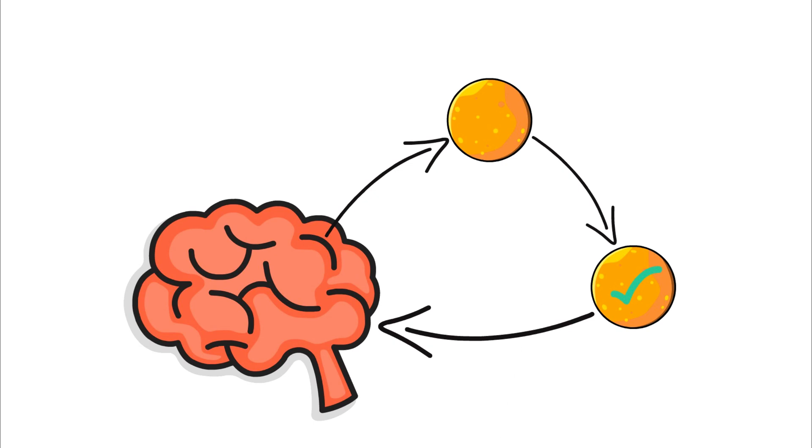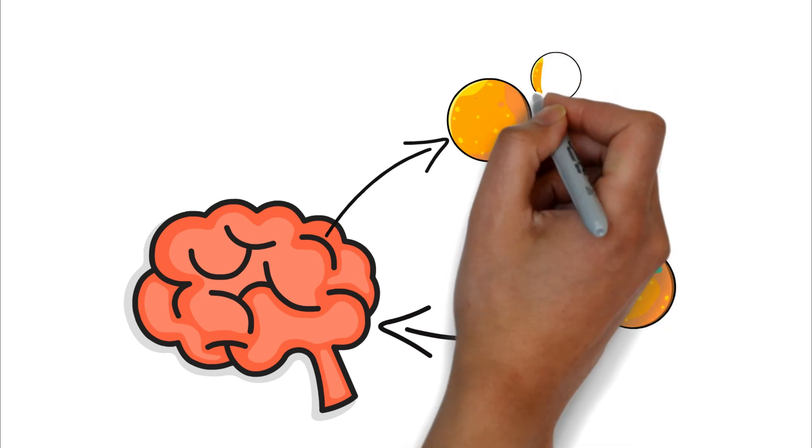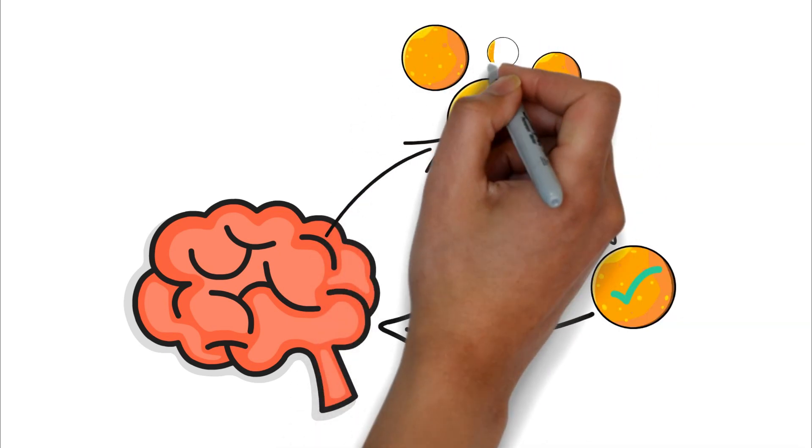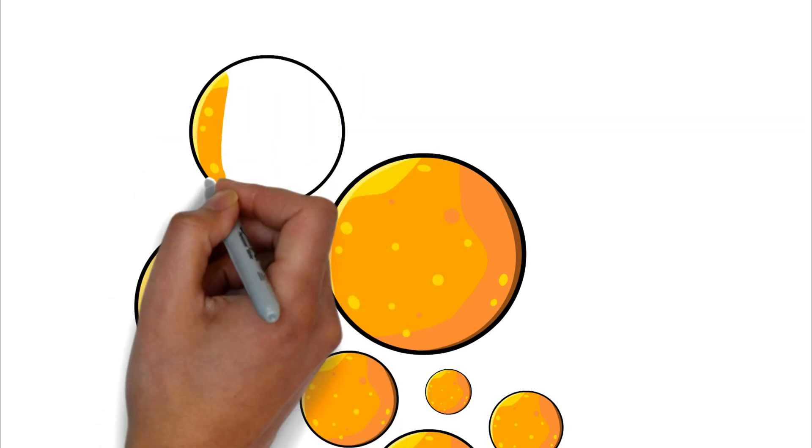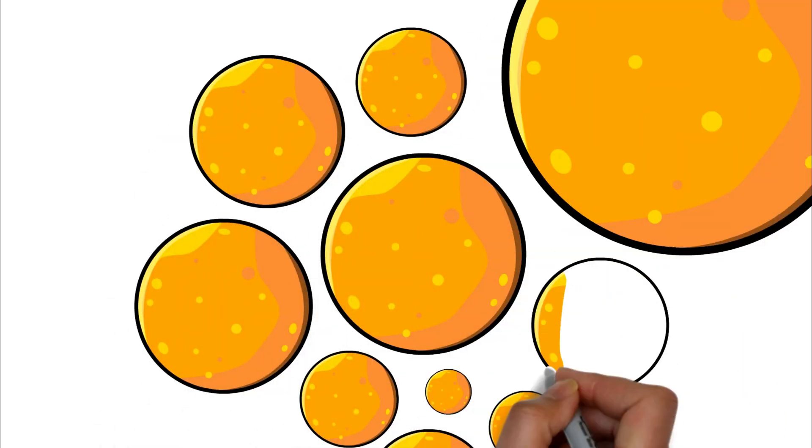SSRIs intercept that process and allow serotonin to be reused. So, as the brain continues to produce serotonin, and more serotonin is recycled, there's obviously going to be more serotonin in my bloodstream, consequently leading to an enhanced mood level.